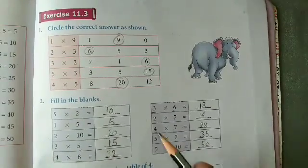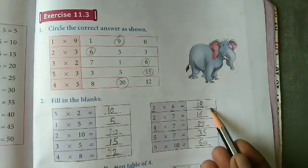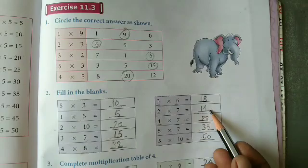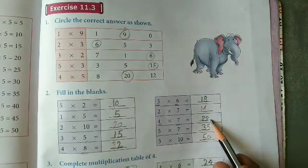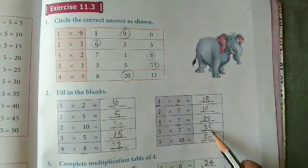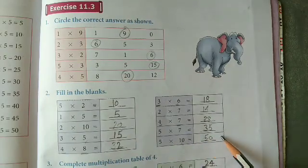Now, 3 sixes are 18, 2 sevens are 14, 4 sevens are 20, 5 sevens are 35, 5 tens are 50.